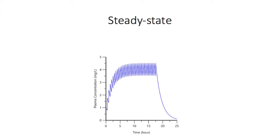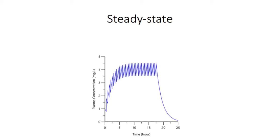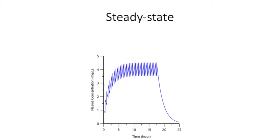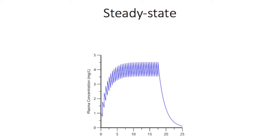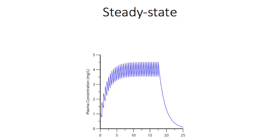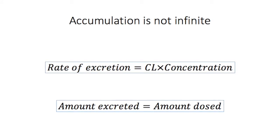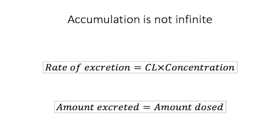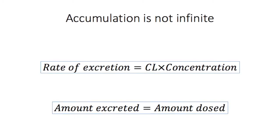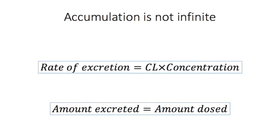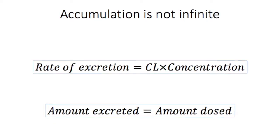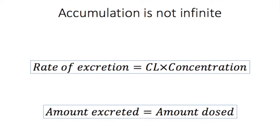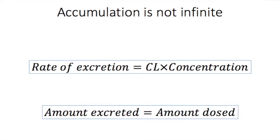But it is also important to realize that accumulation does not continue to infinity, but drug concentrations start to plateau after some time. We say that drug concentrations have reached steady state. This is because as concentrations increase, the rate of excretion increases as well, until a point is reached when the amount excreted over a dosing interval equals the amount administered as a dose. Therefore, there is no further drug accumulation in the body.